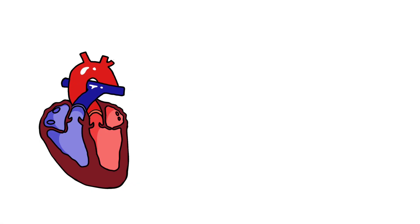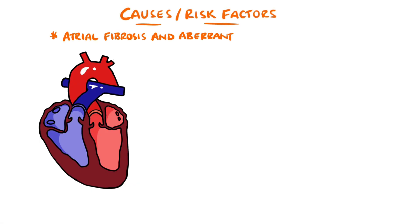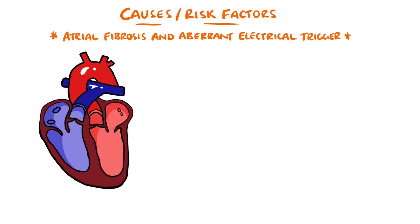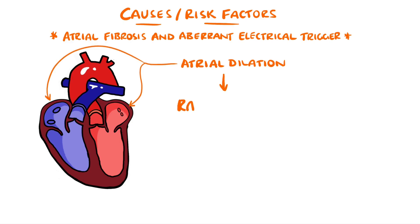But why does this happen? It's usually the result of fibrosis of the atria, and aberrant electrical activity commonly coming from the opening of the pulmonary veins into the left atrium. When the atria become dilated, this leads to activation of the renin-angiotensin-aldosterone system, which over time leads to the fibrosis. So conditions that cause the atria to dilate may cause atrial fibrillation.